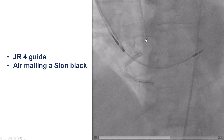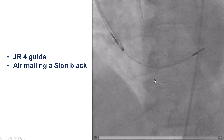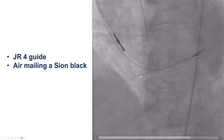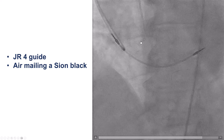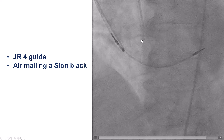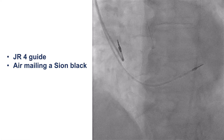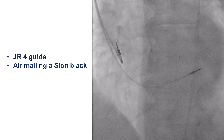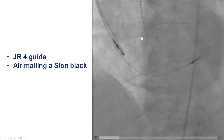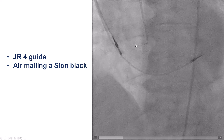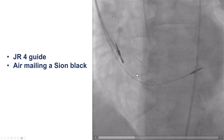Eventually, the guide wire did advance along the course of the right coronary artery. This is the airmail technique, and it is very useful when we have a lot of difficulty selectively engaging the coronary artery ostium. It is a trial-and-error technique — here we saw the success, but it took a lot of effort before getting to this point.